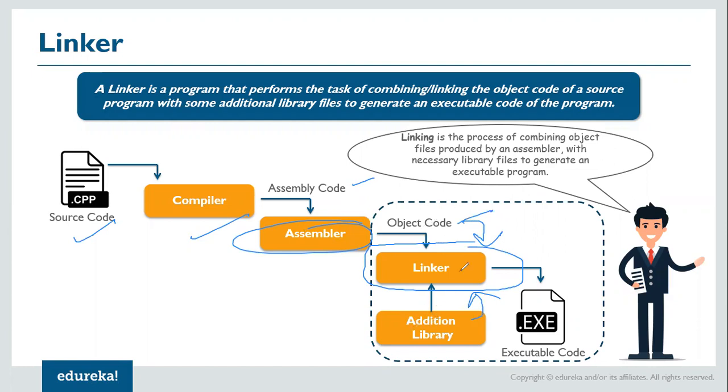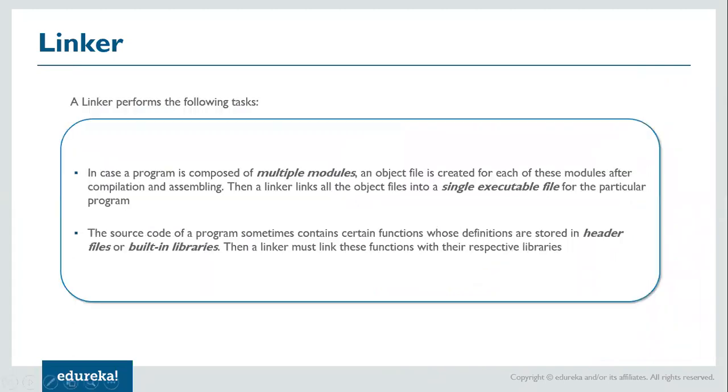And generate an executable file. So linking is the process of combining object files produced by assembler with necessary library files to generate an executable. So this is the purpose of linker, or this is why we make use of a linker. Then let's move on.